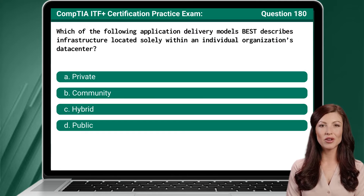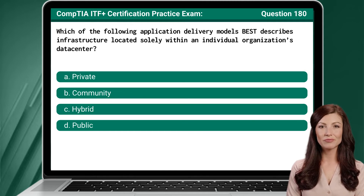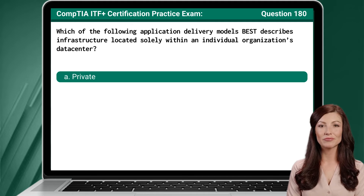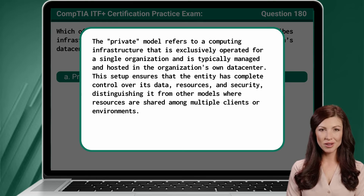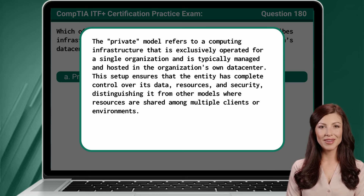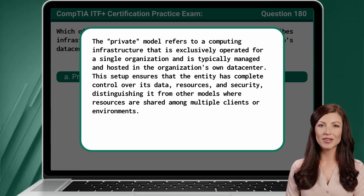Question 180. Which of the following application delivery models best describes infrastructure located solely within an individual organization's data center? The answer is A. Private. The private model refers to a computing infrastructure that is exclusively operated for a single organization and is typically managed and hosted in the organization's own data center. This setup ensures that the entity has complete control over its data, resources, and security, distinguishing it from other models where resources are shared among multiple clients or environments.